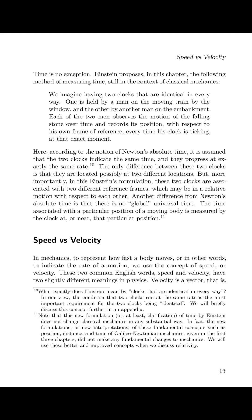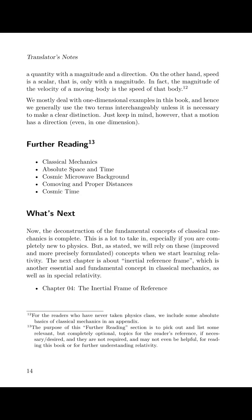Speed versus velocity. In mechanics, to represent how fast a body moves, or in other words, to indicate the rate of a motion, we use the concept of speed or velocity. These two common English words, speed and velocity, have two slightly different meanings in physics. Velocity is a vector — that is, a quantity with a magnitude and a direction. On the other hand, speed is a scalar — that is, only with a magnitude. In fact, the magnitude of the velocity of a moving body is the speed of that body. We mostly deal with one-dimensional examples in this book, and hence we generally use the two terms interchangeably unless it is necessary to make a clear distinction. Just keep in mind, however, that a motion has a direction, even in one dimension.